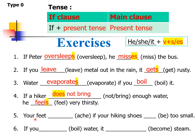Number five: 'Your feet ache.' Is 'feet' singular or plural? It's plural — you have two feet. So what do we put for 'ache'? Since feet is plural, we use 'ache' without s. For the if clause: 'if your hiking shoes are too small' — shoes are plural, two shoes like two feet, so we use 'are,' not 'is.' So: if your hiking shoes are too small, your feet ache.